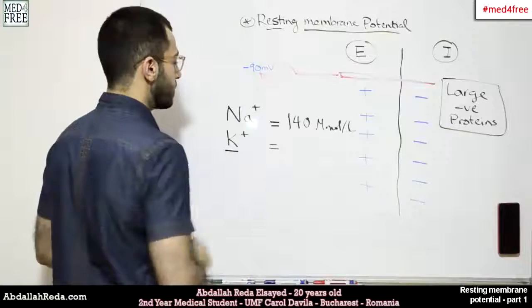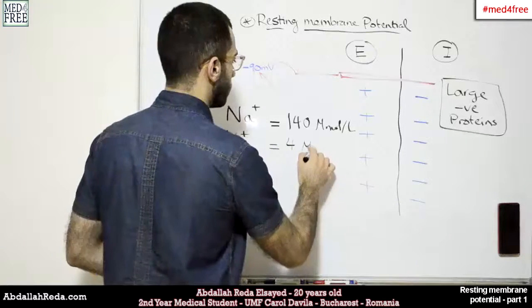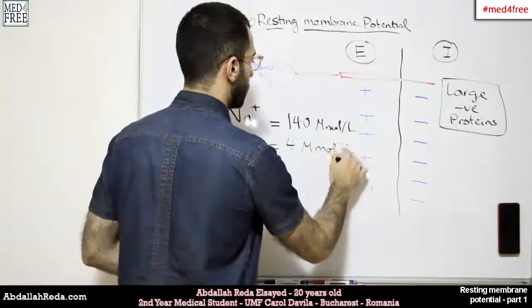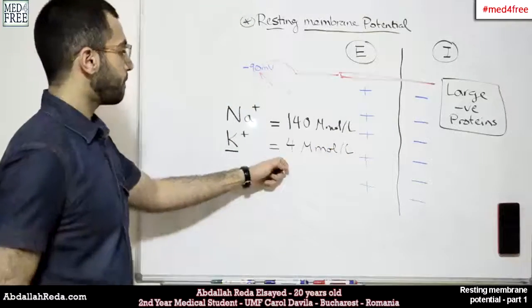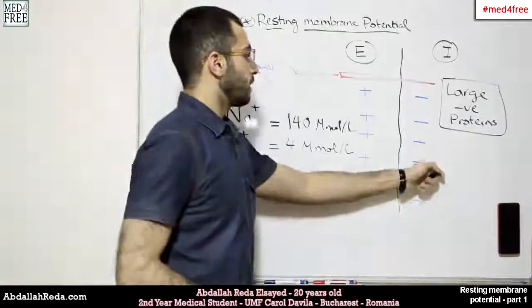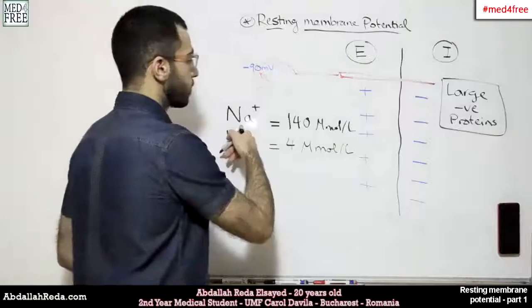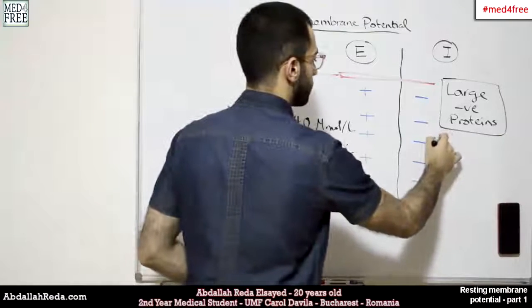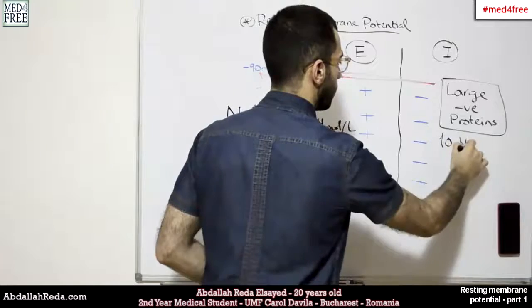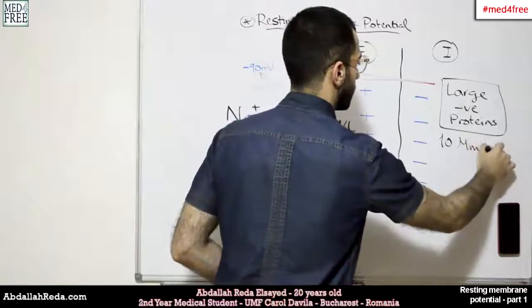For potassium, it's around 4 millimoles per liter. On the inside, sodium is around 10 millimoles per liter.